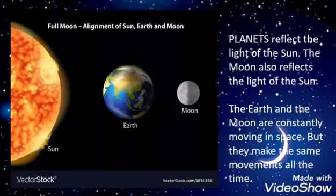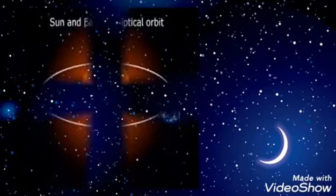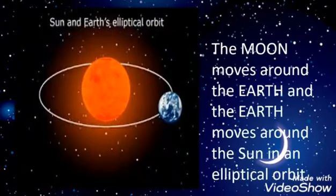The earth and the moon are constantly moving in space, but they make the same movements all the time. The moon moves around the earth and the earth moves around the sun in an elliptical orbit.